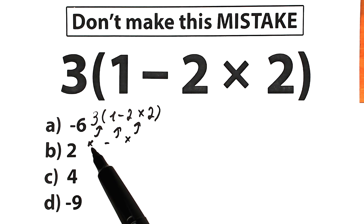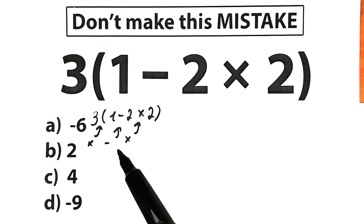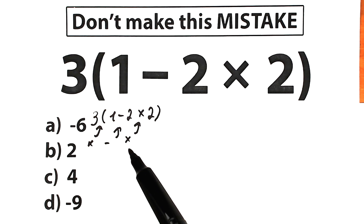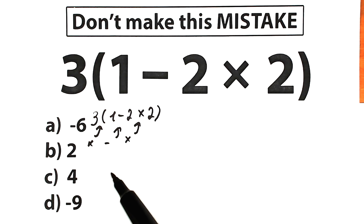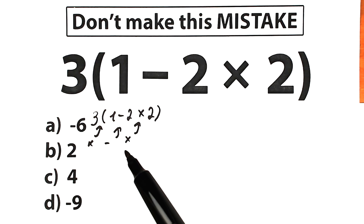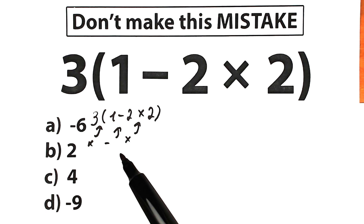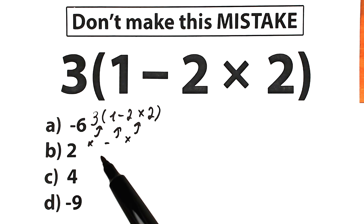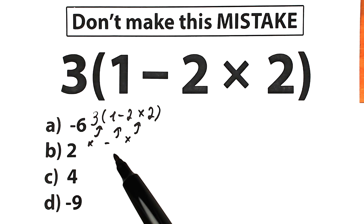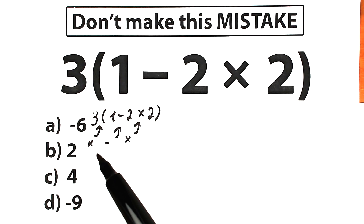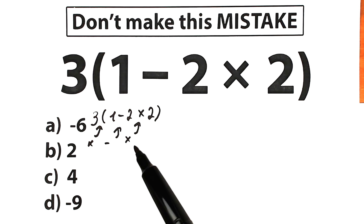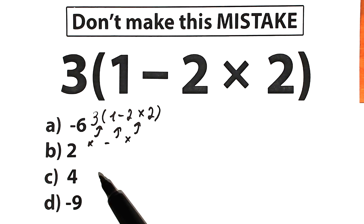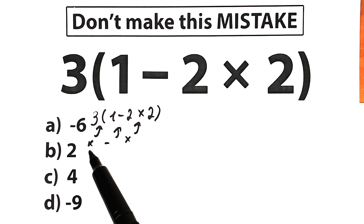One part of students starts with multiplication right here, another part starts with subtraction, and another part starts with multiplication at a different position. A lot of students argue with each other because they don't know what is the correct order or the correct property, and whatever order of operation we select, it's going to create a different answer.